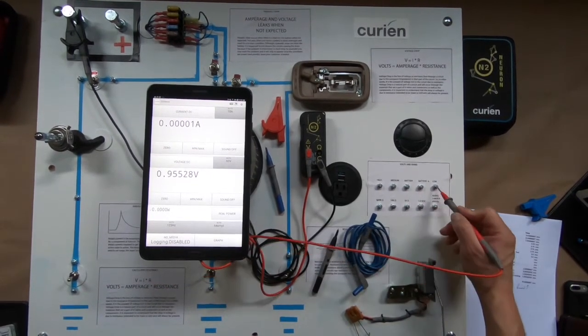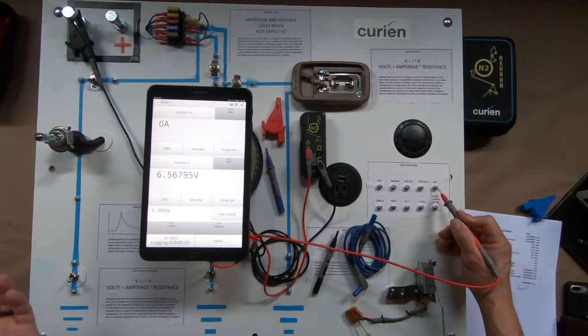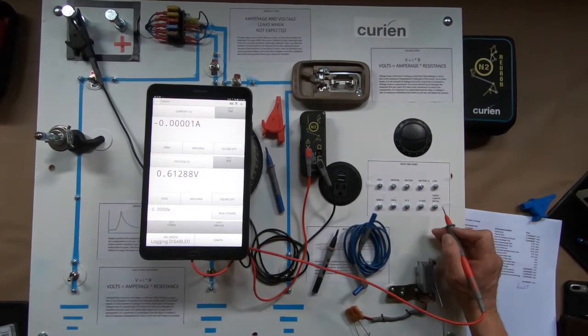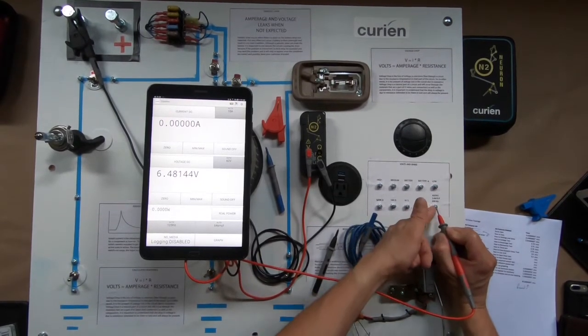In this case we're looking at DC. Now some folks have asked is this TRMS and the answer is yes. You are looking at a TRMS reading. It is a TRMS meter.